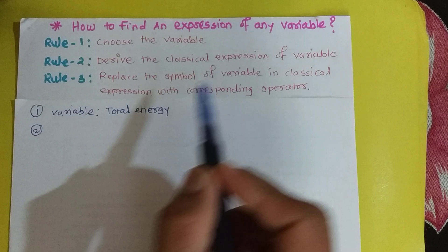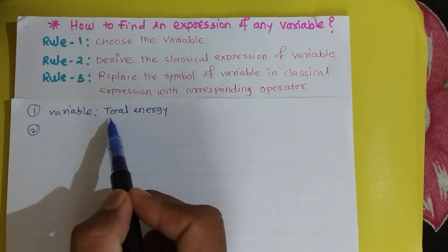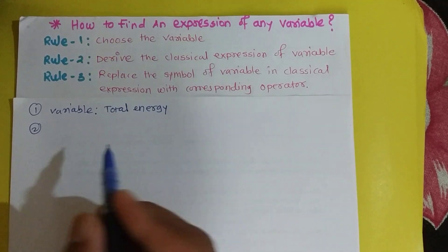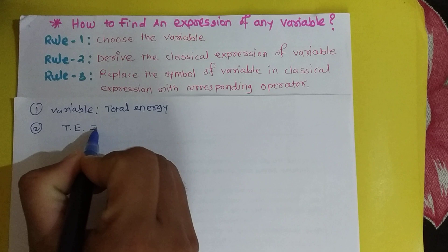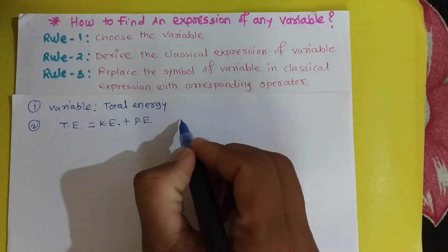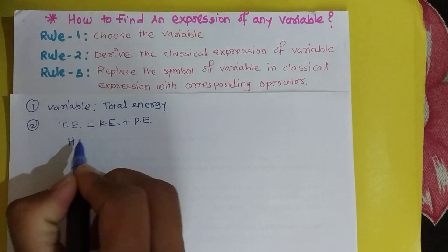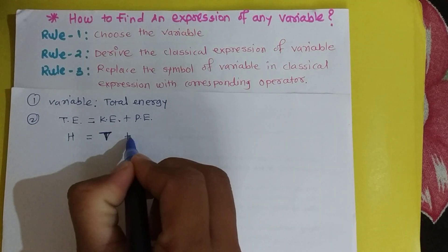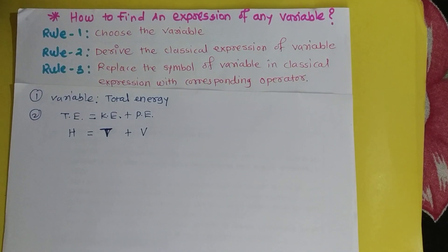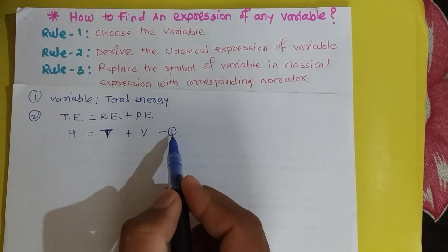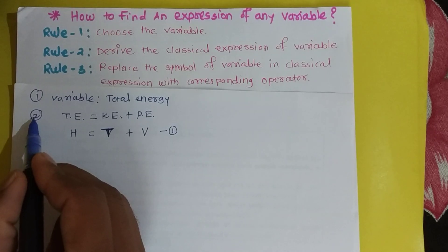According to rule two, you have to derive the classical expression for that variable. Here we chose total energy, so we derive its expression in classical mechanics. In classical mechanics, total energy equals the sum of kinetic energy and potential energy: H = T + V. H denotes total energy, T denotes kinetic energy, and V denotes potential energy. This is the classical expression of the variable total energy, and rule two is complete.